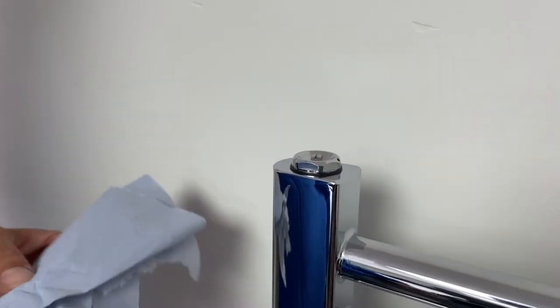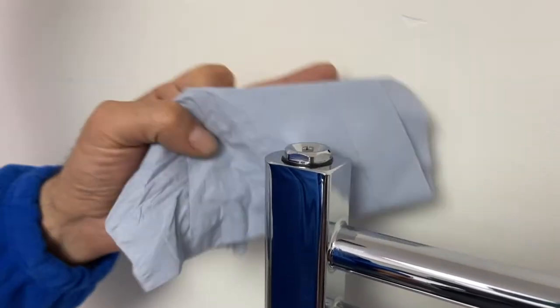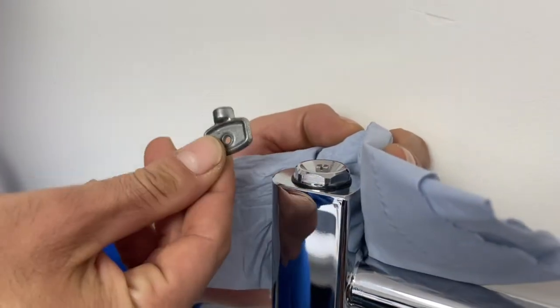Now to bleed the towel rail, we have the rag or tissue to avoid any messes or damage, and our bleed key.